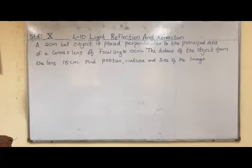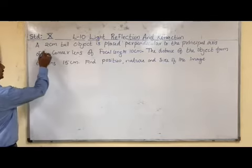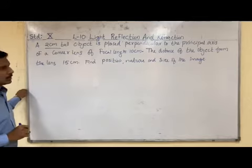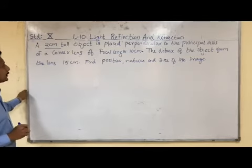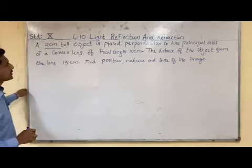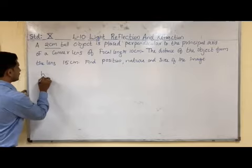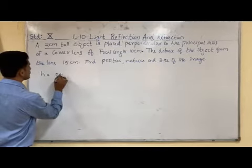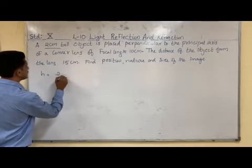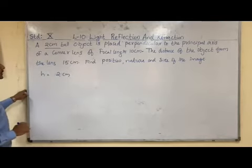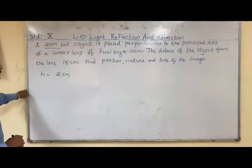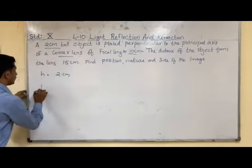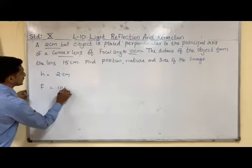While reading this question you get the idea. A 2 cm tall object means the height of the object is given, so h is given as 2 cm. This is the case of a convex lens, and the focal length is given as 10 cm.